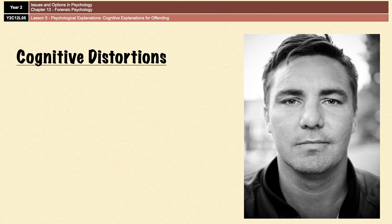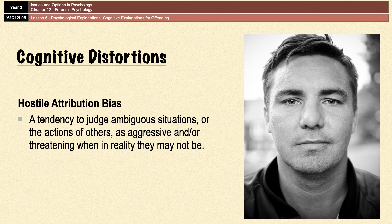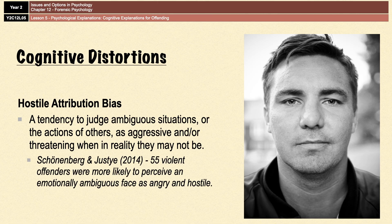A hostile attribution bias is a distortion in the way people interpret events, and it occurs when people lean towards thinking the worst about what other people are doing or thinking. In relation to offending, people with a hostile attribution bias have a tendency to judge ambiguous situations or actions as aggressive and/or threatening when in reality they may not be, and such negative interpretations can then lead to more aggressive behaviors. There is research to suggest that violent offenders are more likely to interpret an emotionally ambiguous face as aggressive and hostile — that is the research by Schoeneberg and Juste from 2014.